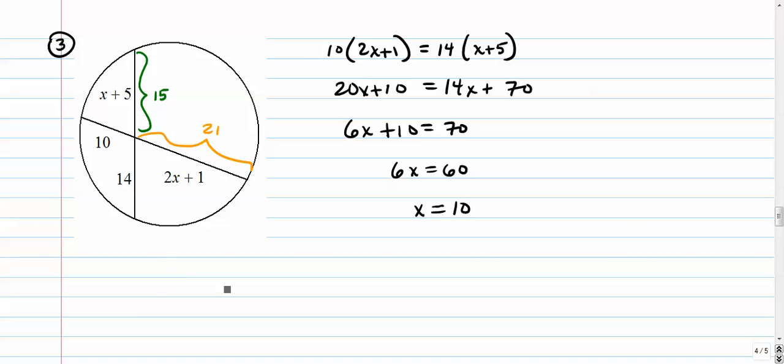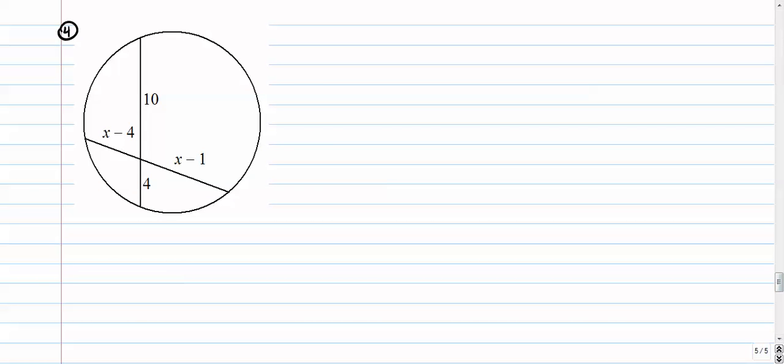Number four is our last example. Here we have 10 times 4 equals binomial times binomial. When you have that, we have to put them both in parentheses and do a little distributive property, more commonly known as the FOIL method: first times first, outside times outside, inside times inside, last times last. Here we go: first times first is X squared, the outside terms negative X, the inside terms negative 4X, the last terms positive 4.